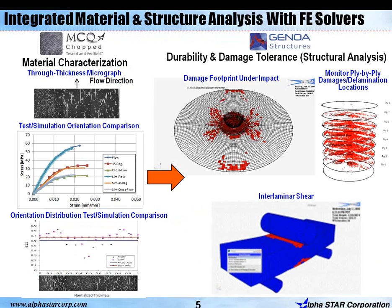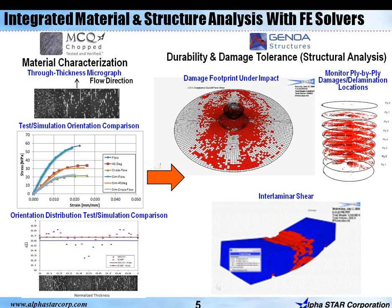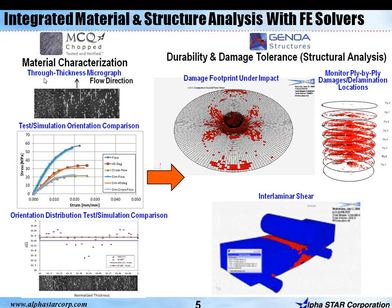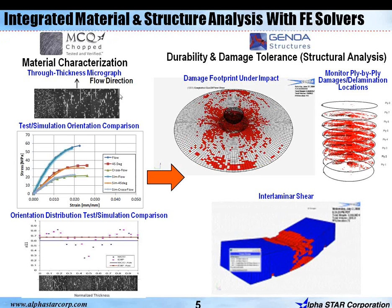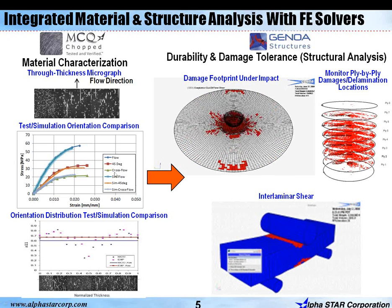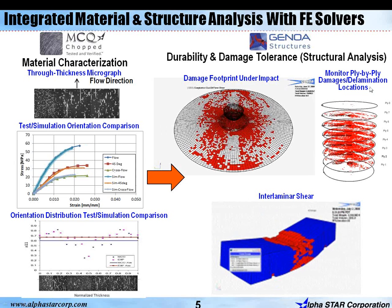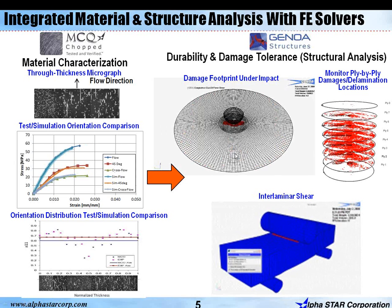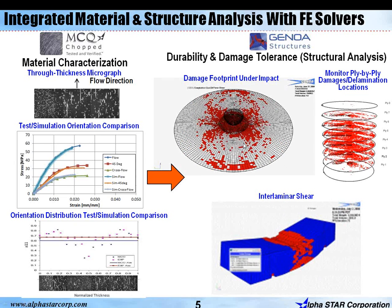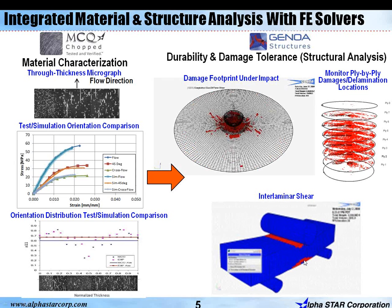This slide shows a pictorial view of integrated material structural analysis with an FE solver. On the left you can see the MCQ Chopped material characterization, which has been validated, and then this material model has been used in the FE model to perform structural analysis. Two different types of structural analysis have been shown: number one is the impact analysis, and number two is the three-point bending test.